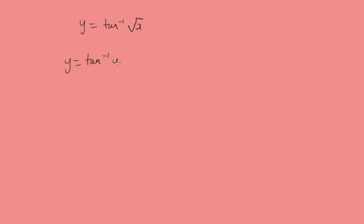So, we'll have tan to minus u, dy by du is 1 over u squared plus 1 and u is x to the half. So, du by dx equals a half x to the minus a half.